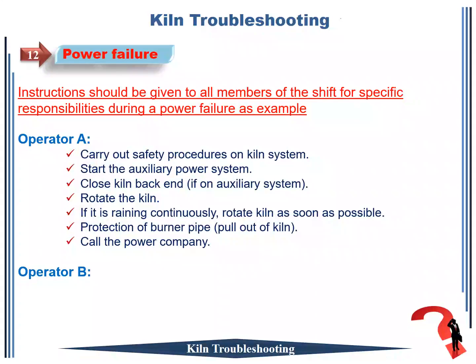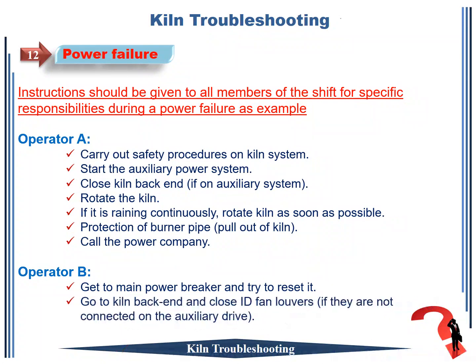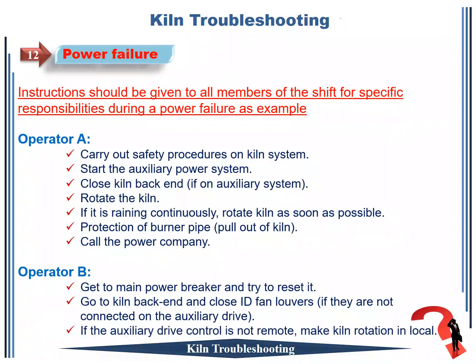Operator B: 1. Get to main power breaker and try to reset it. 2. Go to kiln back end and close ID fan louvers if they are not connected on the auxiliary drive. 3. If the auxiliary drive control is not remote, make kiln rotation in local.